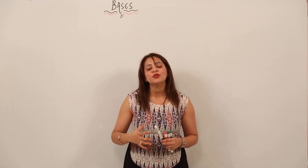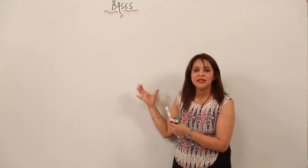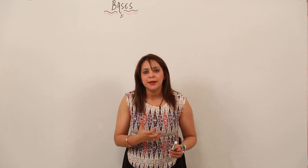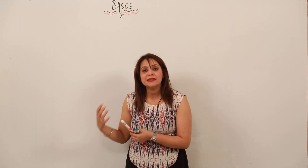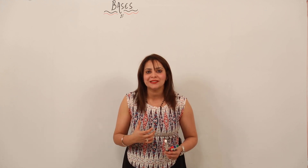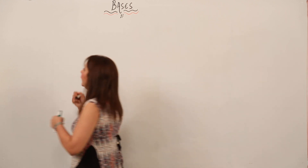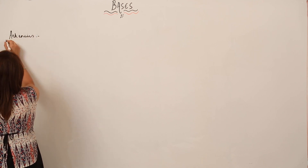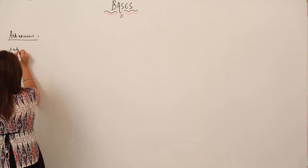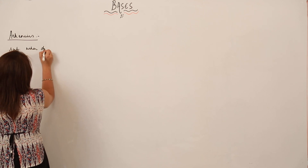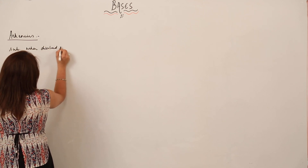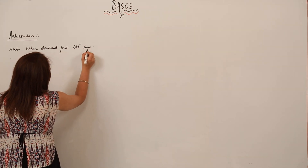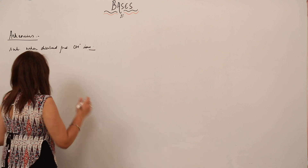We are going to start with the topic of bases. As you are already familiar with the acid concept, let's see how bases are differentiated from acids. According to Arrhenius, substances which when dissolved in water produce hydroxide ions are called bases.